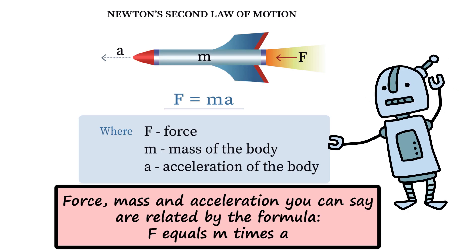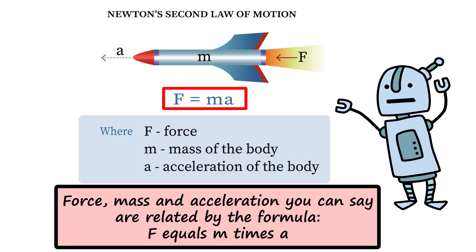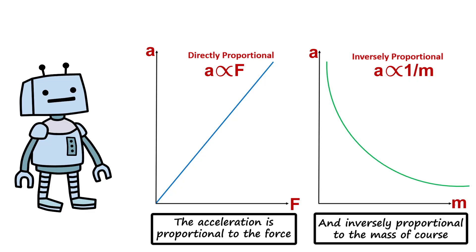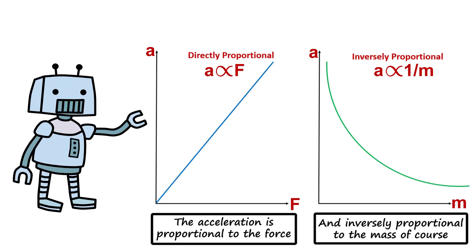Force, mass, and acceleration, you can say, are related by the formula F equals M times A. The acceleration is proportional to the force, and inversely proportional to the mass of course.